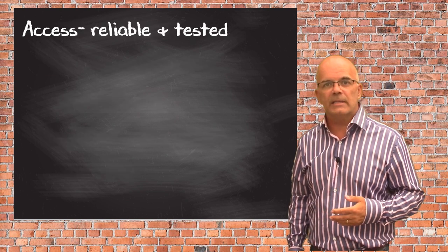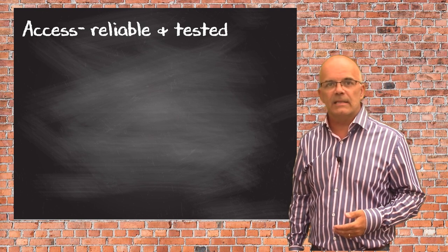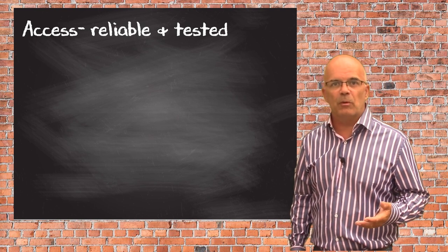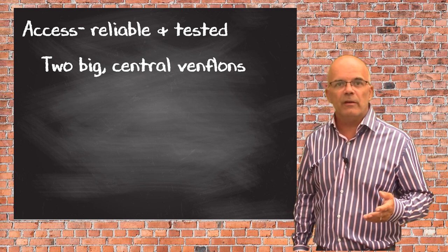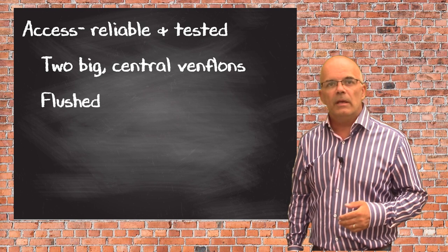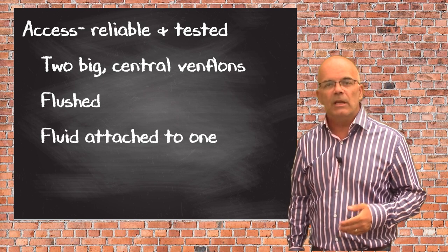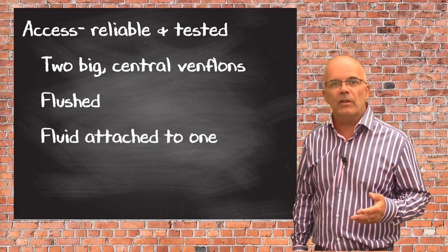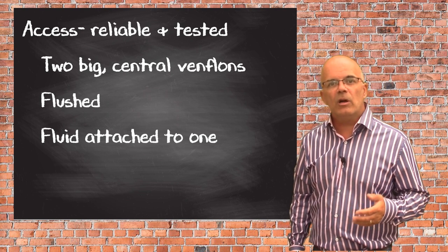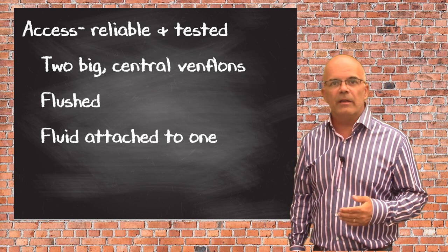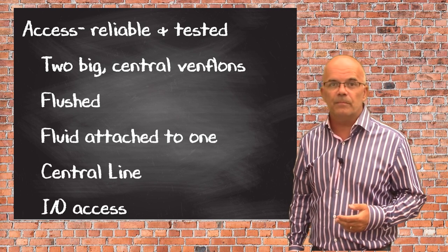Access: reliable and tested. If possible, there should be two routes of access — Venflons, as big and as central as possible — and ensure that they've both been flushed. It is wise to have a bag of fluid attached to one of them to act as a flush and to ensure that the line will remain patent throughout the procedure. If you can't get access, it might be that a central line is considered, or intraosseous might be your last option.